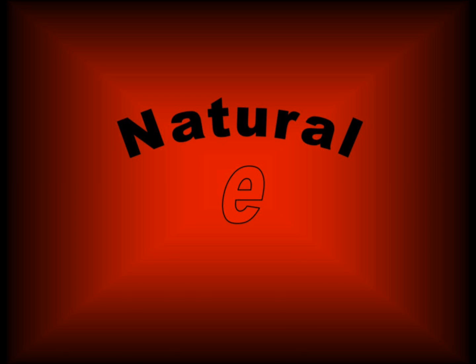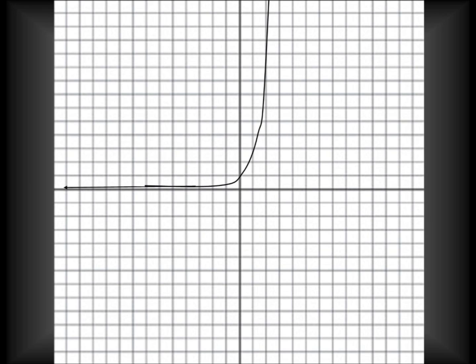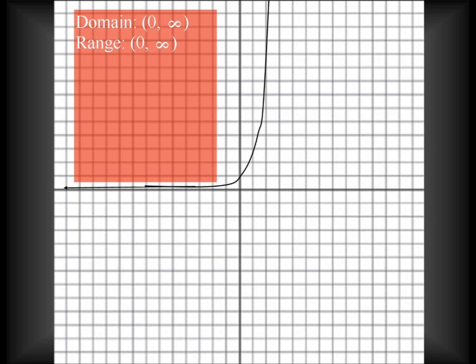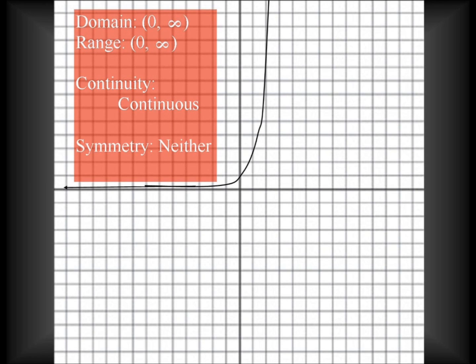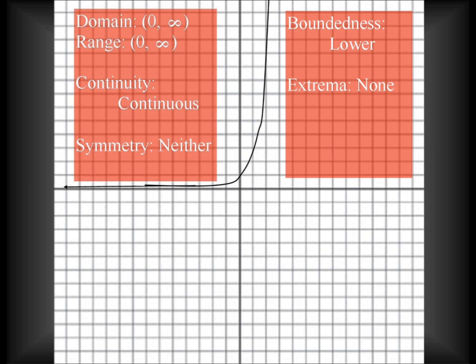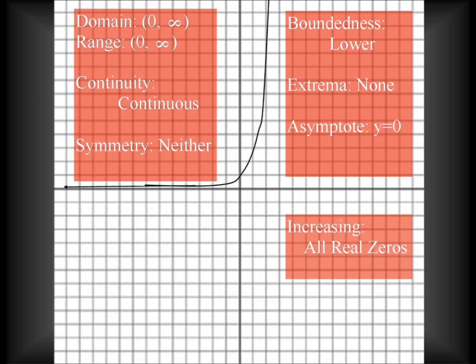You already learned what e was. Now we're gonna look at the graph and analyze the function e to the x. Domain and range is zero to infinity. Continuous is the continuity. The symmetry is neither — it has no mate. It has a lower bound but none of the extrema. The asymptote is y equals zero. It is increasing, all real zeros.